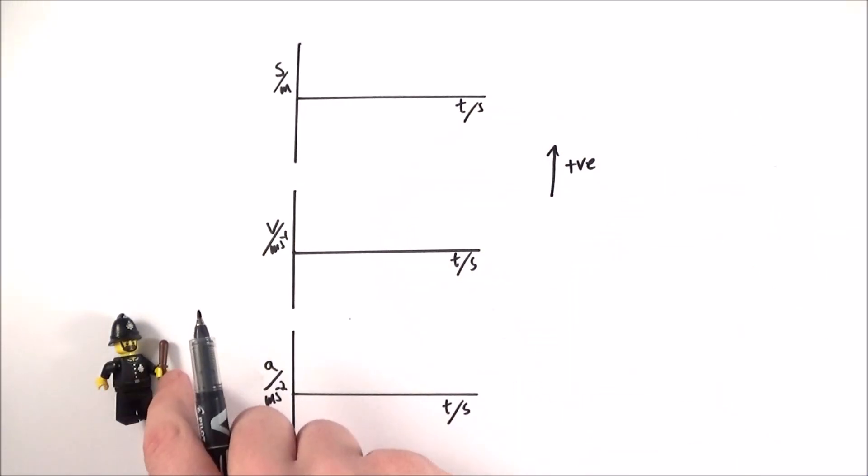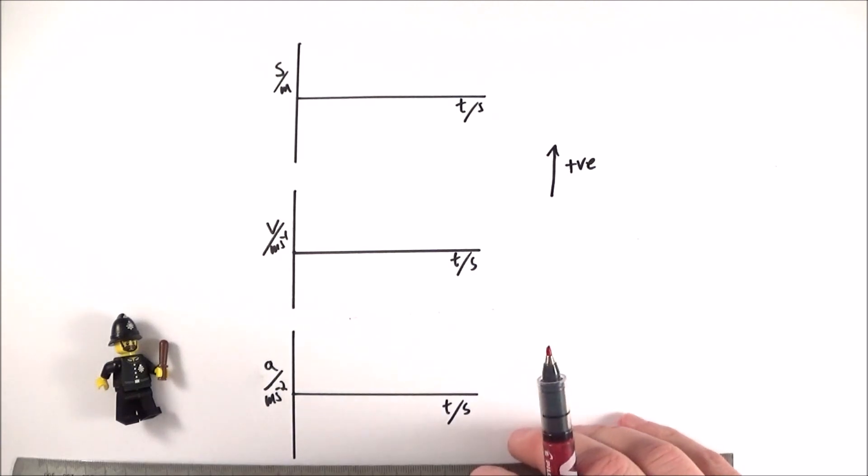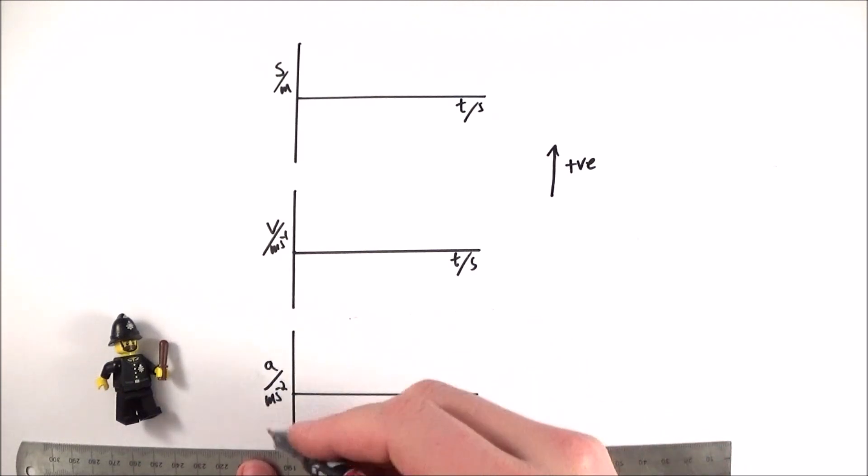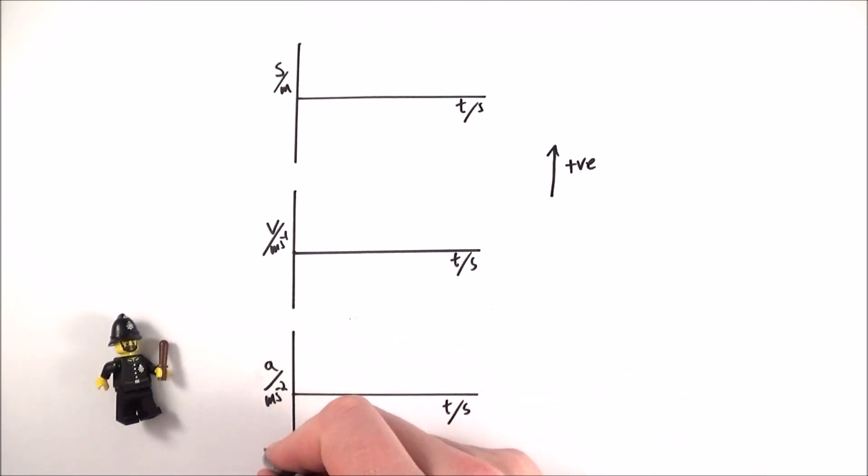And if we know that that is falling under gravity for the entire time, the only thing that's stopping it going up and up and up into space is the fact that gravity is pulling it down, we might know that, or we will know that gravity acts downwards with a value of 9.81 metres per second squared. So this value here is equal to minus g. So this is 9.81 metres per second squared.